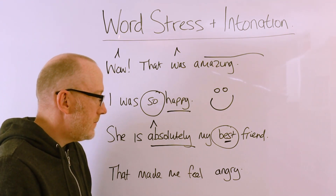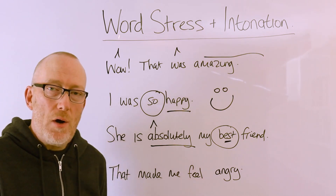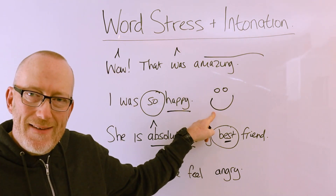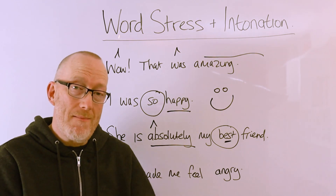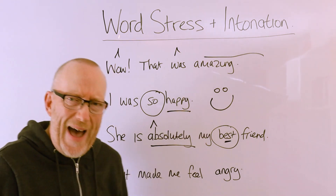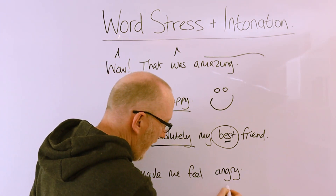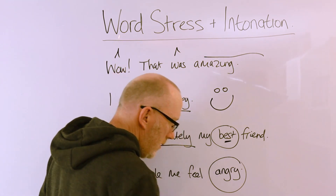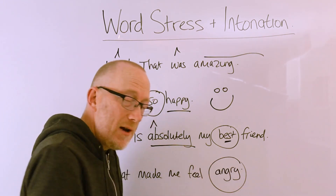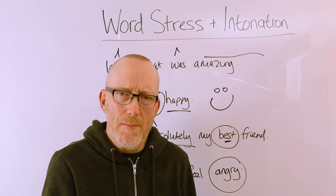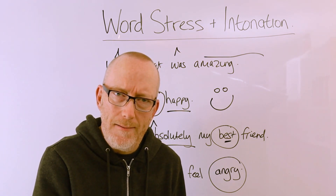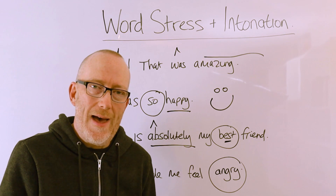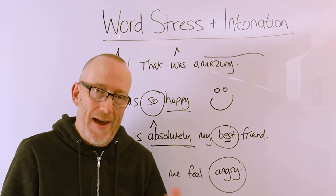'That made me feel angry.' Angry is a negative word, and whenever you're saying it you need the opposite body language and emotion compared to happy. What you want to do with 'angry' is lower the tone of your voice — your voice is going to drop. You're going to pronounce this kind of word very specifically, very precisely: 'That made me feel angry.' So these are just some very simple and easy ways that you can use word stress and intonation in your IELTS exams.